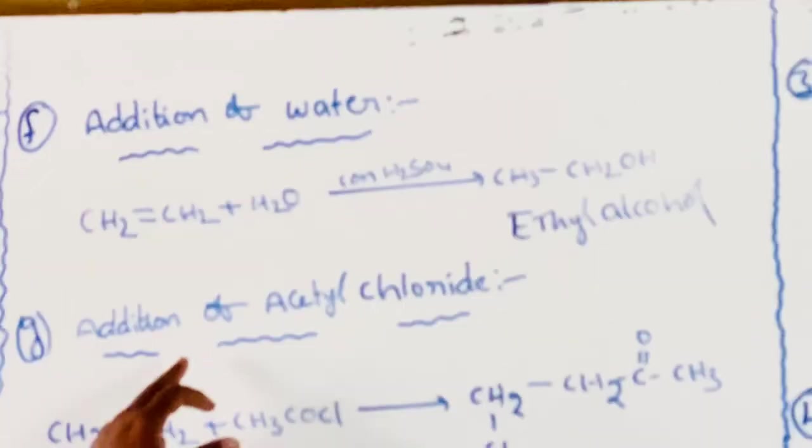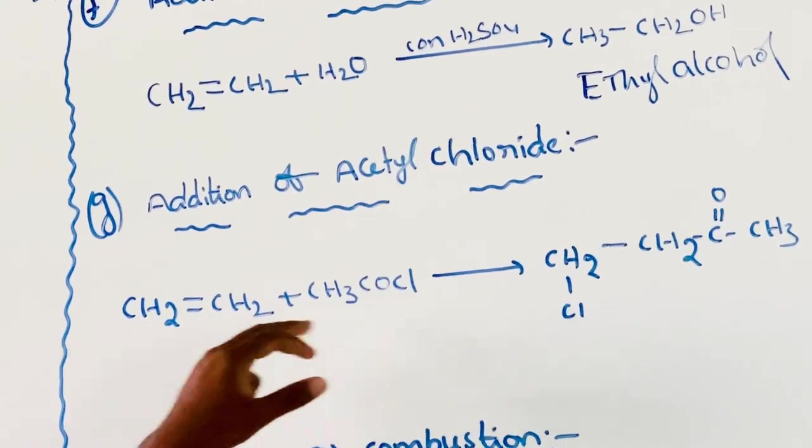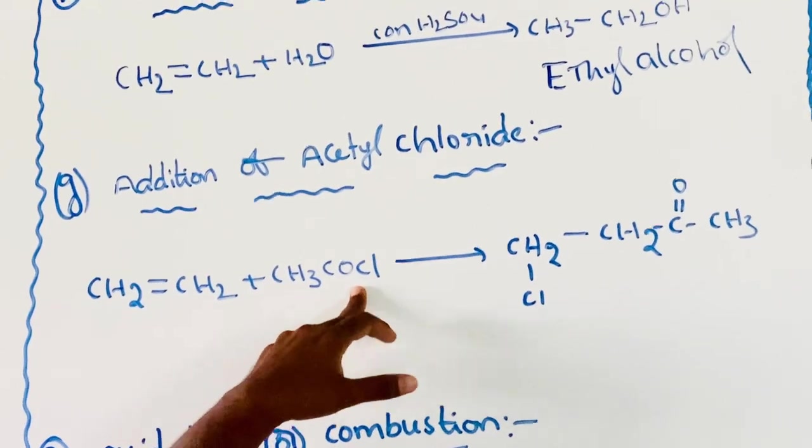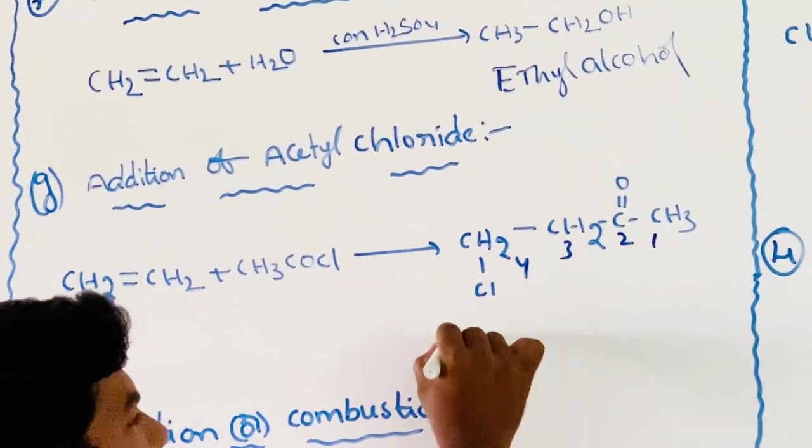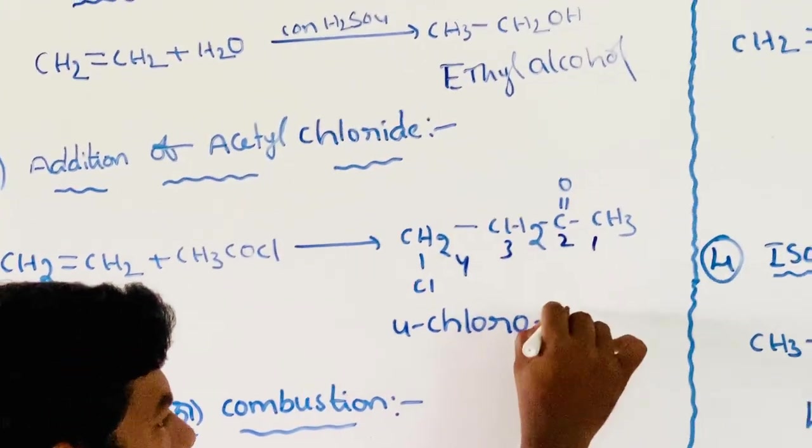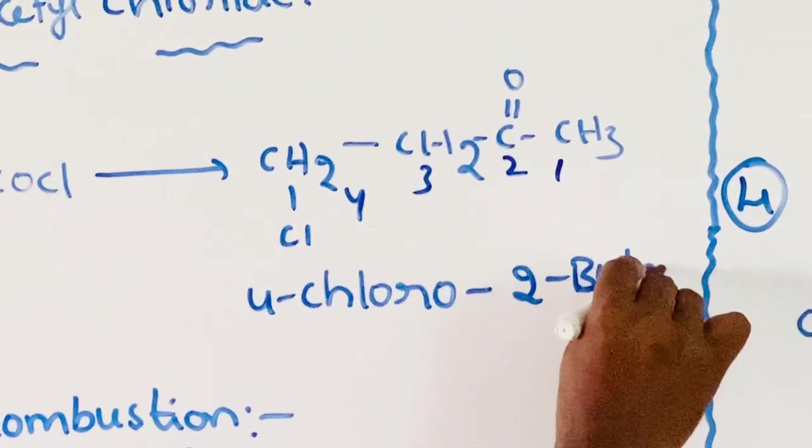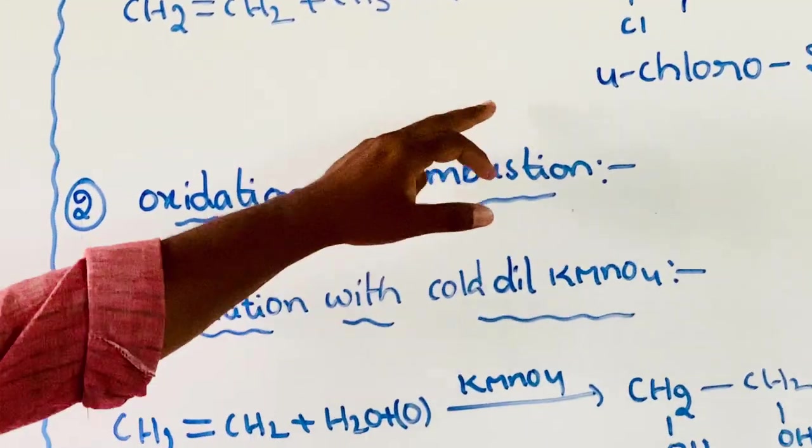Next, addition of acetyl chloride. The formula of acetyl chloride is CH3COCl. Ethene reacts with acetyl chloride to give 4-chloro-2-butanone.